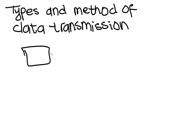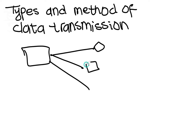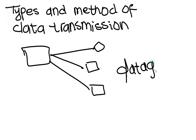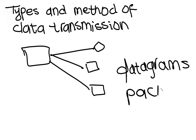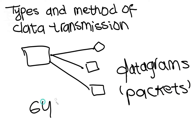Data sent over long distances is usually broken up into data packets. These are also sometimes called datagrams, or we can simply call them packets. The packets of data are usually quite small, typically 64 kilobytes, which are much easier to control than a long continuous stream of data.